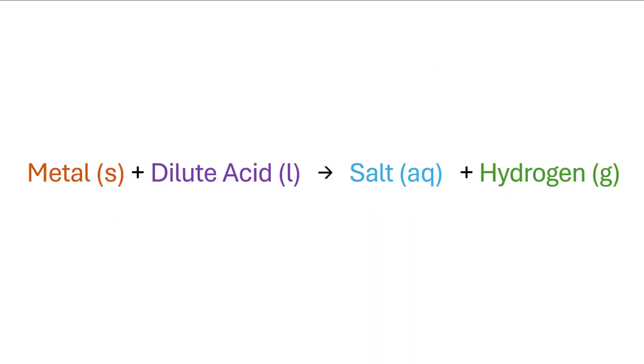An interesting chemical property of most metals of the periodic table is that they react with dilute acids to produce the corresponding metal salt along with the release of hydrogen gas. This property is often utilized for the preparation of hydrogen gas on a small scale in the laboratory.